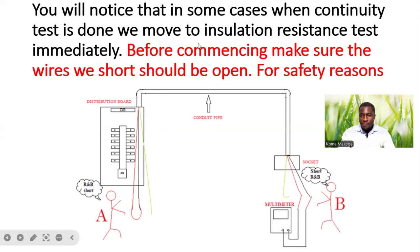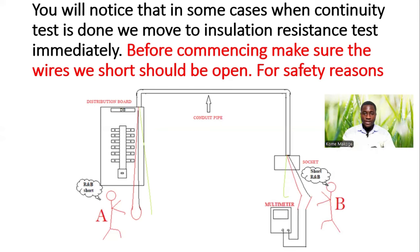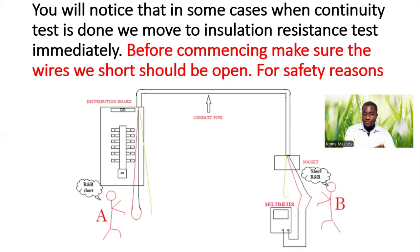Before commencing, make sure the wires that were shorted should be open. Because while we are carrying out continuity test, we have to short one end and then test the other end. So after that test has been done, if we are going straight to perform insulation resistance test, we have to ensure that we open the end that was shorted previously while carrying out continuity test, before carrying out our mega test.